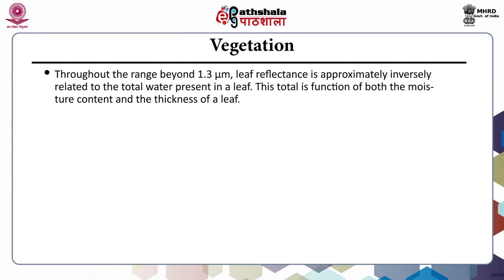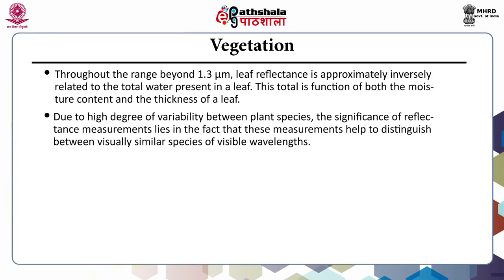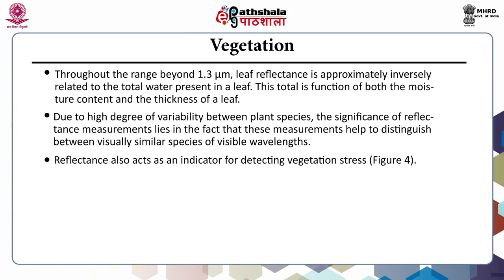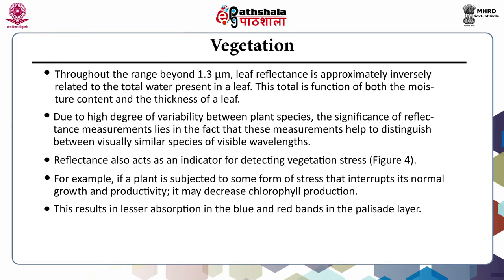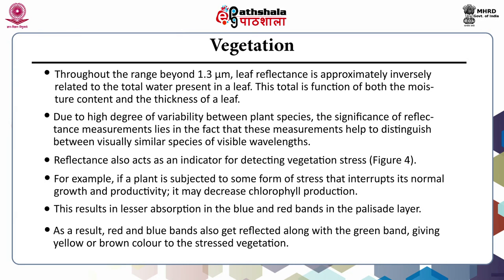Throughout the range beyond 1.3 micrometer, leaf reflectance is approximately inversely related to the total water present in a leaf. This total is a function of both the moisture content and thickness of a leaf. Reflectance measurements can distinguish between visually similar species at visible wavelengths. Reflectance also acts as an indicator for detecting vegetation stress. For example, if a plant is subjected to stress that interrupts normal growth and productivity, it may decrease chlorophyll production, resulting in lesser absorption in the blue and red bands. As a result, red and blue bands also get reflected along with the green band, giving a yellow or brown color to the stressed vegetation.